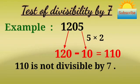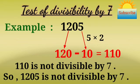110 is not divisible by 7, so 1205 is not divisible by 7.